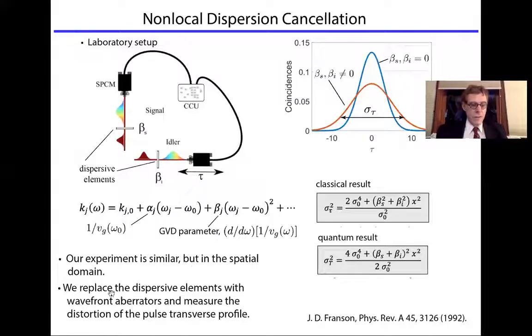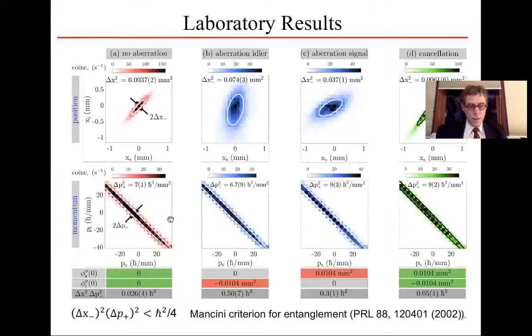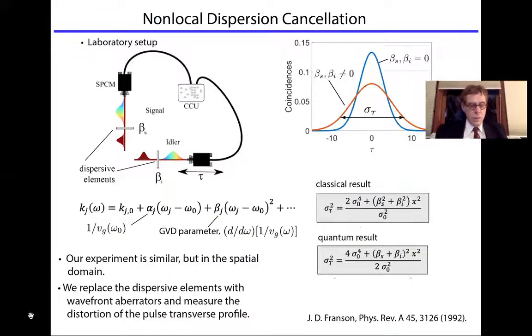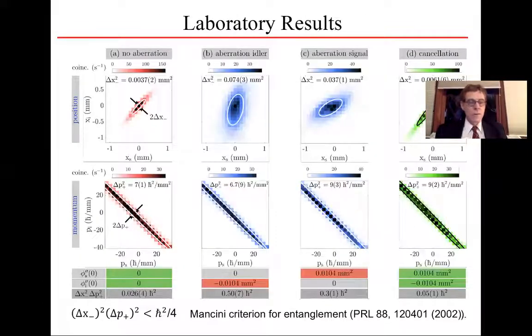So our experiment is similar to this, but it's in the spatial domain. And in particular, we replaced the dispersive elements with wavefront aberration aberrators, and measure how the transverse structure of the pulse gets modified.